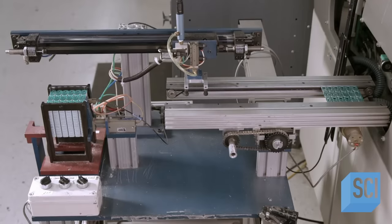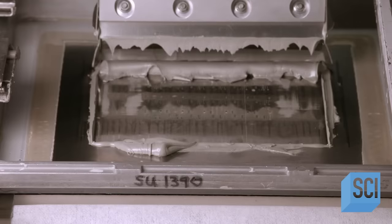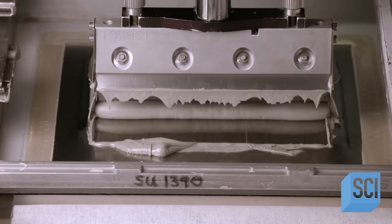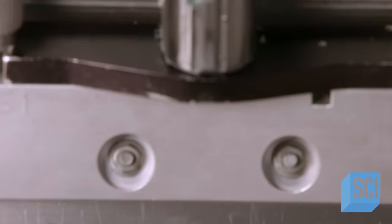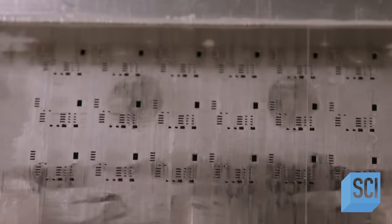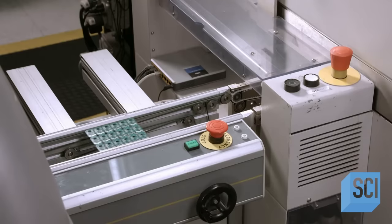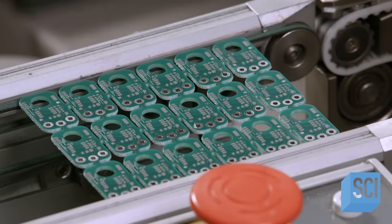A robot transfers the boards to a conveyor, which takes them to a solder screen printer. The printer squeegees solder through a stencil to deposit it in specific locations on the boards. The squeegee and stencil then retract and the conveyor shoves the boards forward to the next operation.